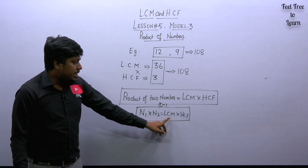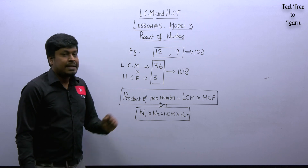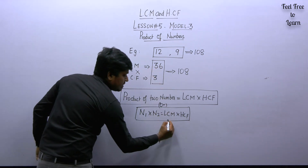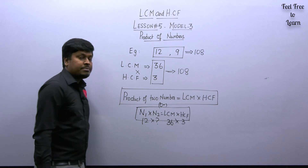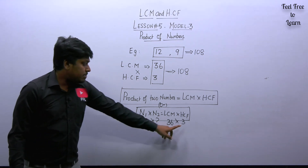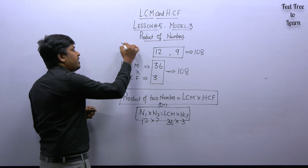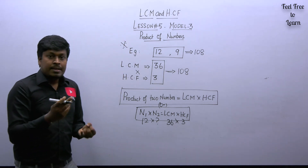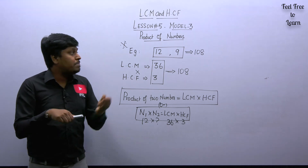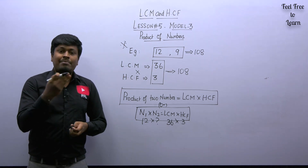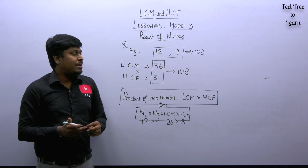Let me explain how questions on this model appear. They usually give the LCM of the numbers, HCF of the numbers, and one number, then ask you to find the second number. If you are preparing for railway exams, campus interview exams, or SSC exams, you should prepare model number three thoroughly, because in competitive exams LCM and HCF questions come mainly from model number three.